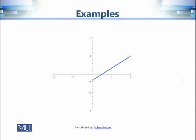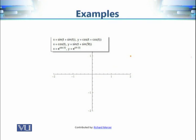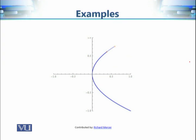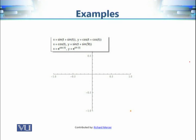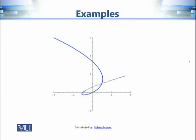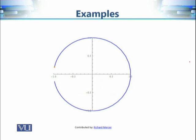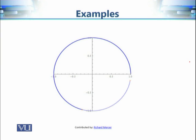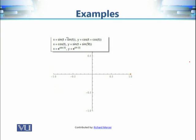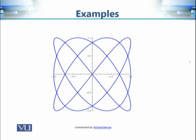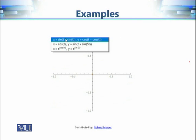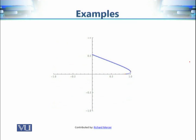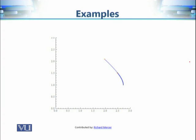Consider some examples: a line segment is simple but not closed; a parabola is simple but not closed; a self-intersecting curve is not simple and not closed; an incomplete arc is simple but not closed; a simple non-self-intersecting closed shape is both simple and closed; a figure-eight type curve is closed but not simple; and another example is both simple and closed.